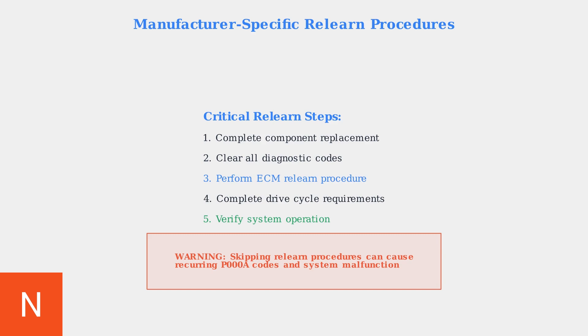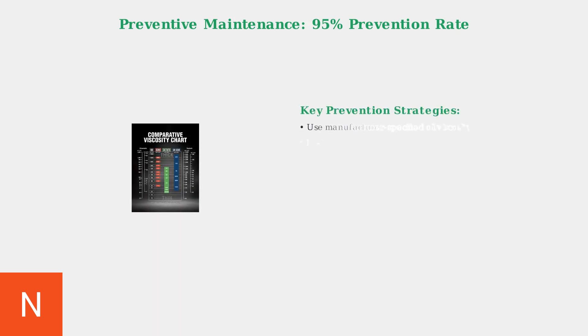Preventive maintenance with proper oil specifications achieves a 95% prevention rate for P000A codes. Using manufacturer-specified oil viscosity, maintaining proper change intervals, and monitoring oil condition are the most effective prevention strategies. Understanding these repair approaches and their success rates enables technicians to choose the most effective solution for each P000A case, whether through cleaning, component replacement, or preventive maintenance strategies.